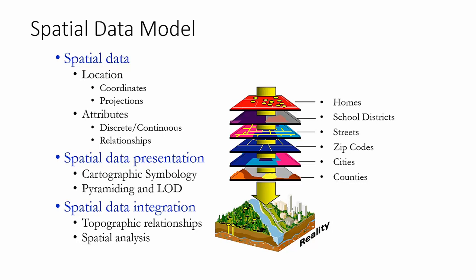We'll talk more in depth about table relationships later in the course. Along with the spatial data itself, there is the presentation of spatial data. I might have a point, line, or polygon, and I know its location, but I have to decide what it's going to look like. That's the cartographic data model, or cartographic symbology.